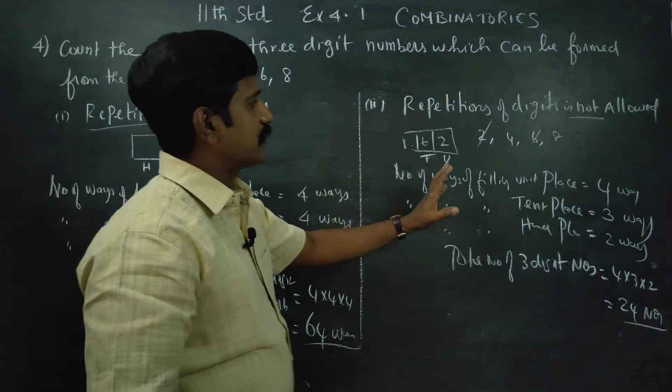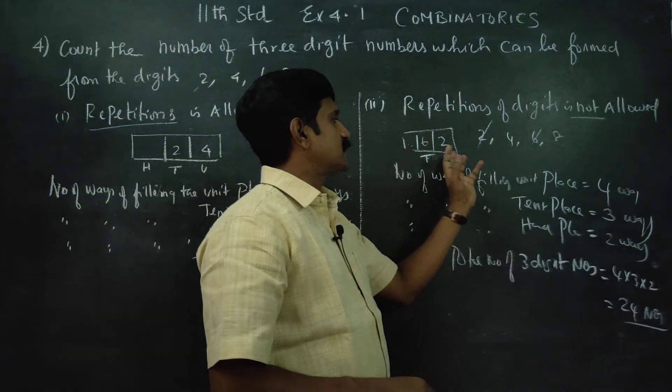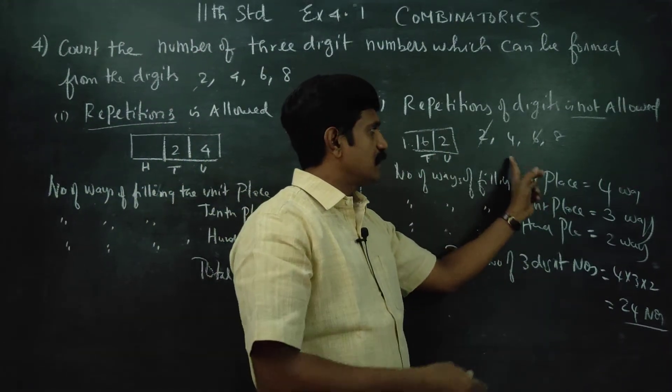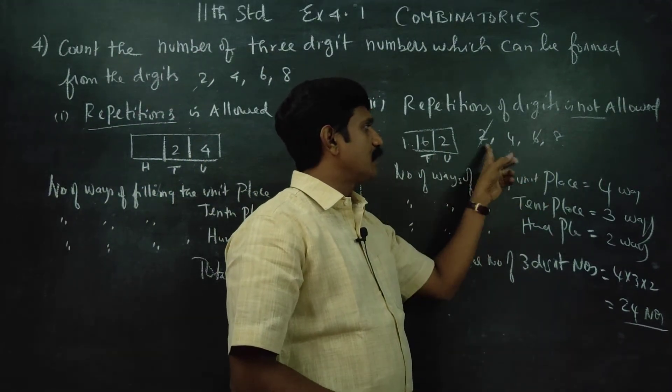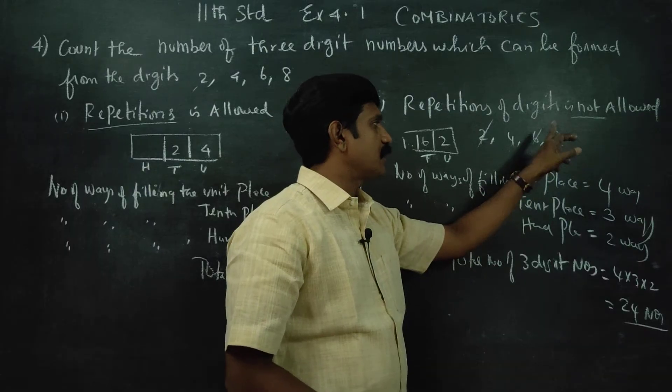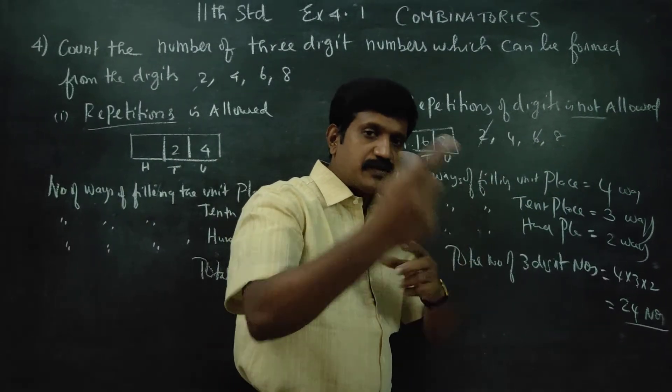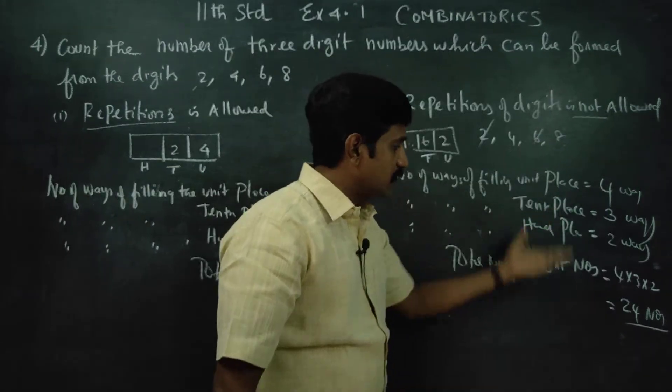For example, with repetition allowed, numbers like 246, 468, 248, and 864 can be formed, where every digit from the set is used.